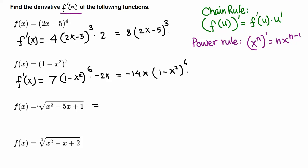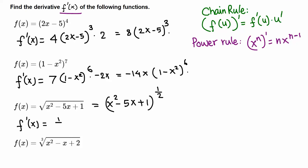Finally, we can rewrite the square root function: √(x² - 5x + 1) is the same as (x² - 5x + 1) raised to the 1/2 power. Again, this is like the previous two questions — something raised to 1/2 is the outer function, and (x² - 5x + 1) is the inner function. Using the chain rule with the power rule: bring down the exponent 1/2, leave the inside alone, and the exponent becomes 1/2 minus 1, which is negative 1/2.